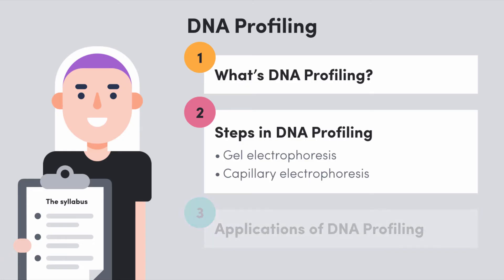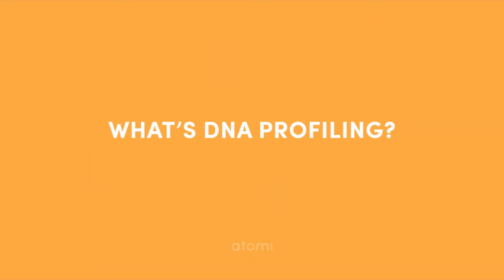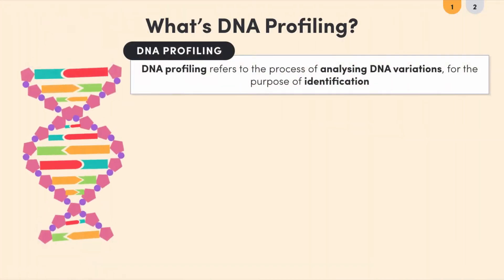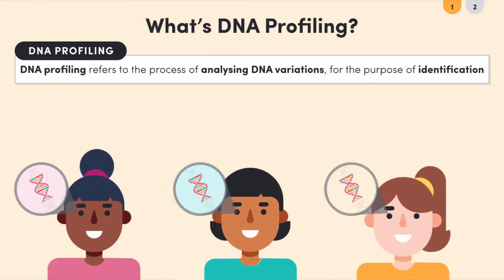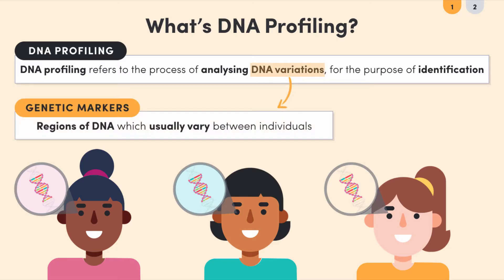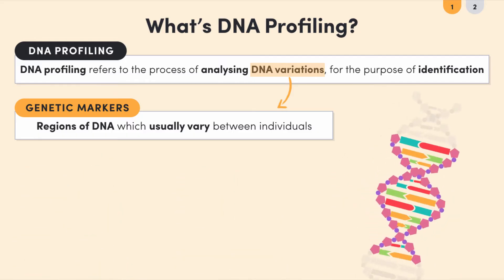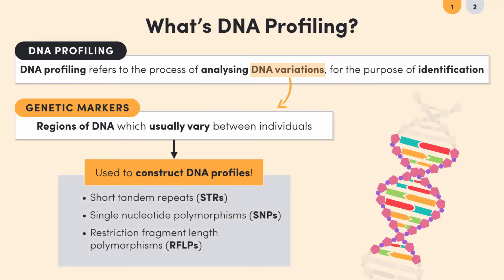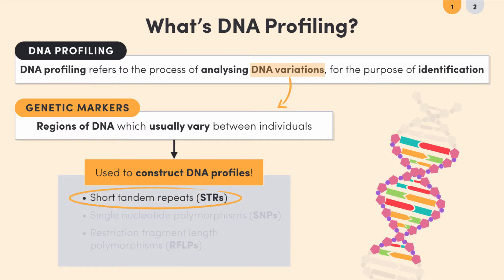DNA profiling refers to the process of analyzing a person's DNA for variations so that we can identify them. DNA sequences which are usually different between different people are referred to as genetic markers. Since we know exactly where they are on the chromosome, they can be used to construct DNA profiles. The most commonly used genetic markers are short tandem repeats, which we refer to as STRs for short.